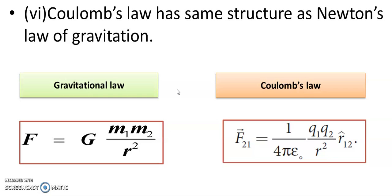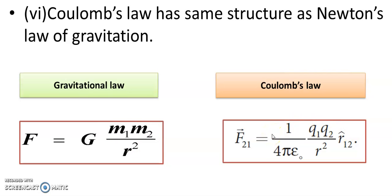Electrostatic force is directly proportional to the product of the two charges, whereas in the gravitational law it is proportional to the product of the two masses. In Coulomb's law, the electrostatic force is proportional to the product of the two charges, and in gravitational force it is proportional to the product of the two masses. However, there are some important differences between these two laws.